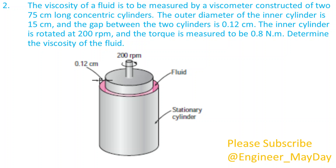The inner cylinder is rotated at 200 revolutions per minute and the torque is measured to be 0.8 newton meters. Determine the viscosity of the fluid.